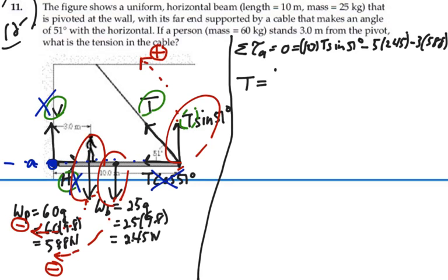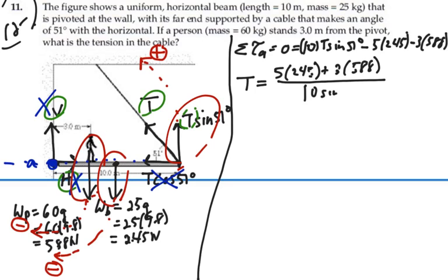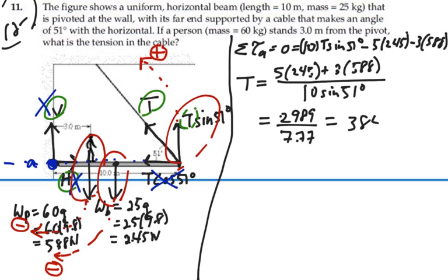Solving for T: T equals 5 times 245 plus 3 times 588, all divided by 10 times sine of 51 degrees. So 5 times 245 plus 3 times 588 is 2,989, and 10 times sine of 51 is 7.77. That gives T equals 384.6 Newtons.